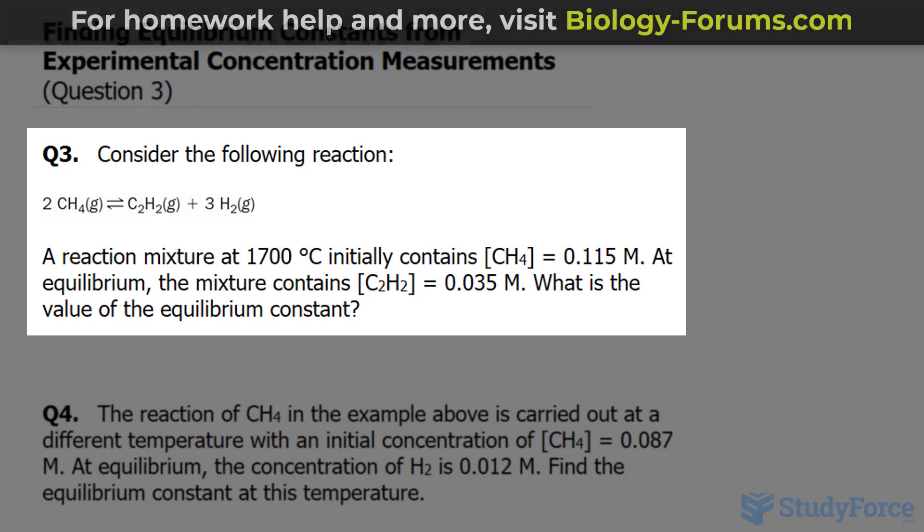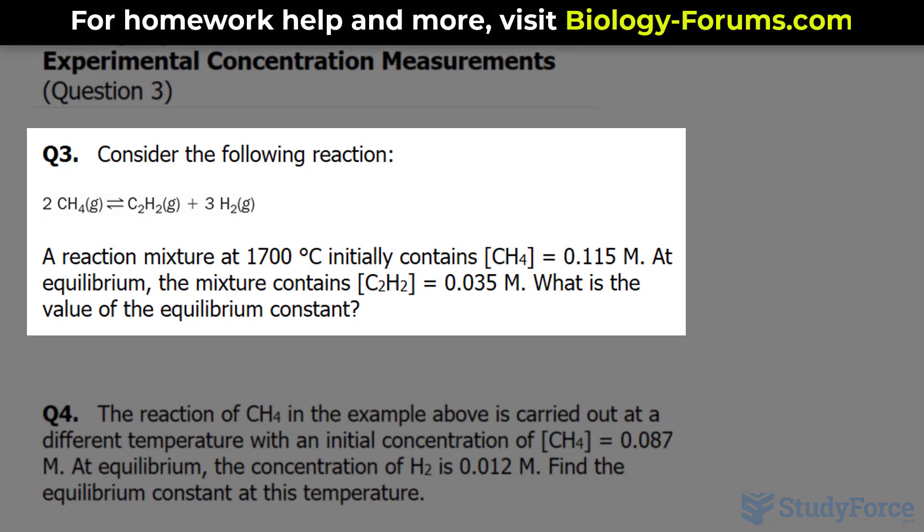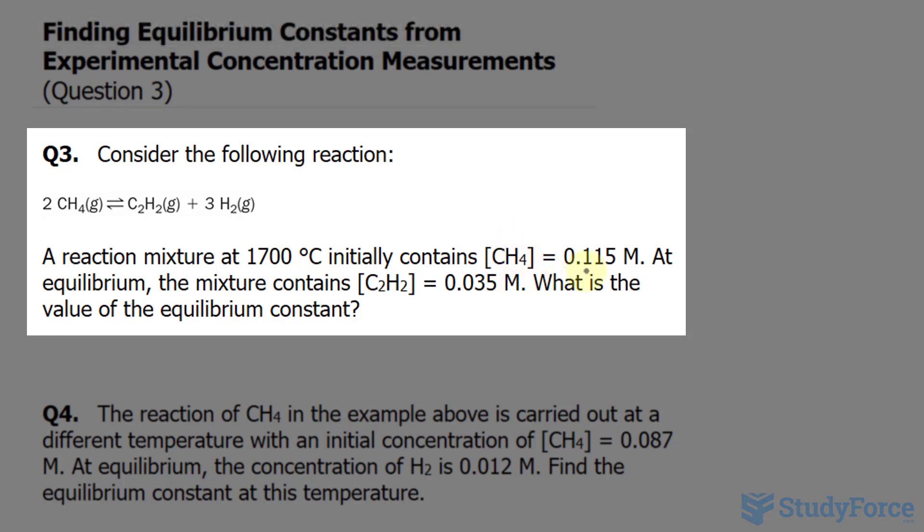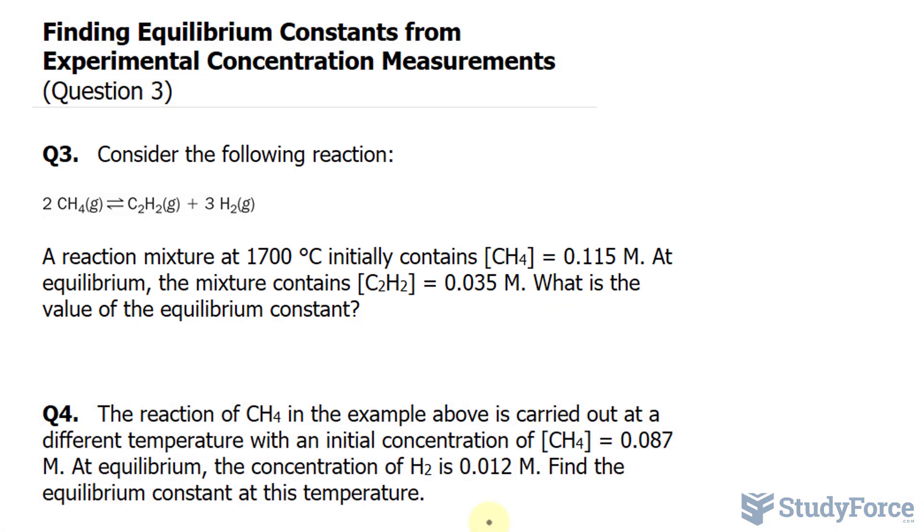We have 2CH4 and this produces C2H2 and 3 molecules of H2. A reaction mixture at 1700 Celsius initially contains a concentration of CH4 of 0.115 molars. At equilibrium, the mixture contains a concentration of C2H2 of 0.035 molars. What is the value of the equilibrium constant?